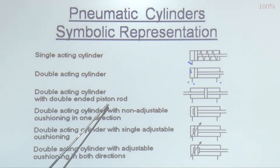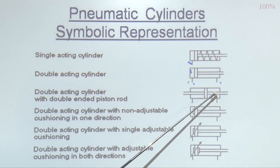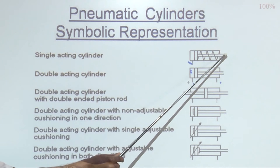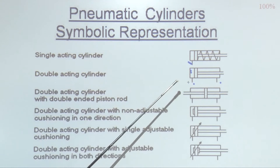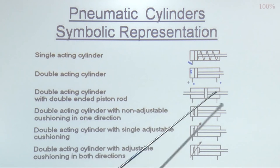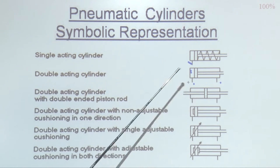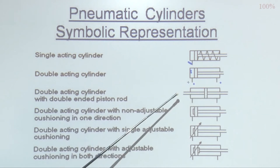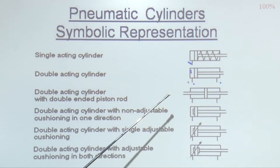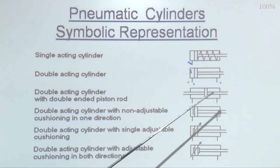The third type has a rod on both sides of the piston with the same diameter. In some applications you want the forward stroke and reverse stroke speeds to be the same. In such cases we use a double rod-end piston, which gives the same speed in both forward and retractive directions.